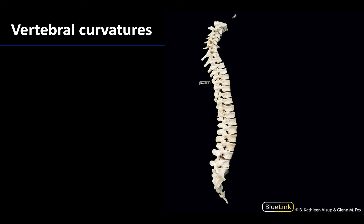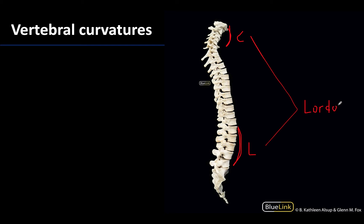Recall that when we're talking about the cervical region and the lumbar region — right around this region here — we're going to have what is called a lordosis. It's going to be a bit more concave posteriorly. So the cervical and lumbar regions are going to be lordotic curvatures.